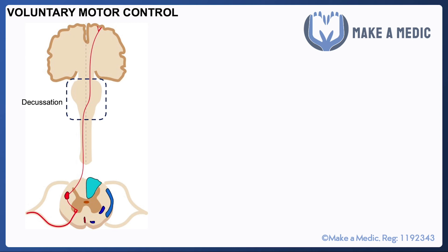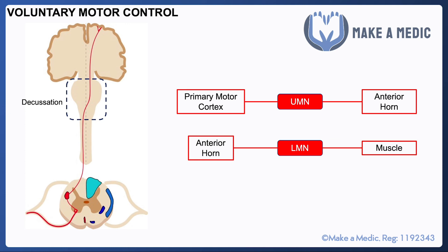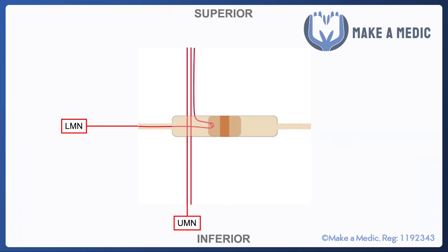It's important to remember that sensory pathways go up whereas motor pathways go down - sensory pathways transmit information from the peripheries to the brain, while motor pathways action commands from the primary motor cortex. The motor pathways are actually a little bit simpler because they only consist of two neurons. Lower motor neurons go from the anterior horn of the spinal cord to the muscle, and upper motor neurons go all the way from the primary motor cortex to the anterior horn where they synapse with the lower motor neuron. Upper motor neurons decussate at the level of the medulla.